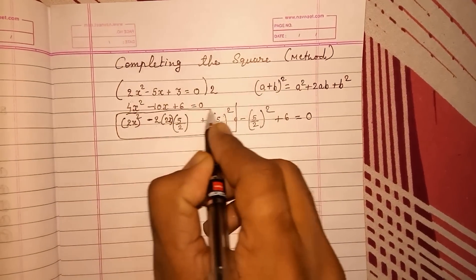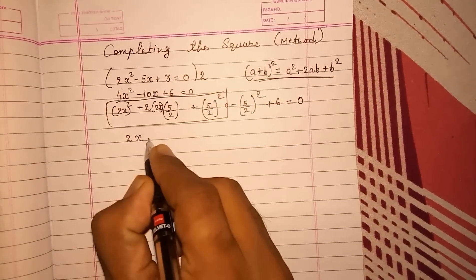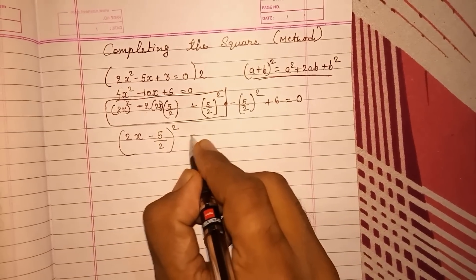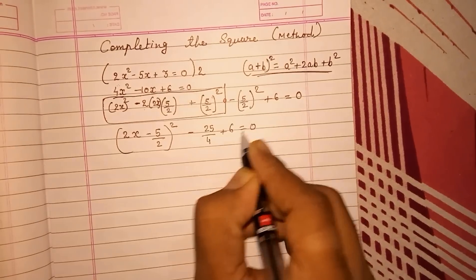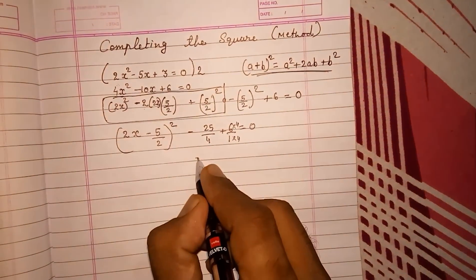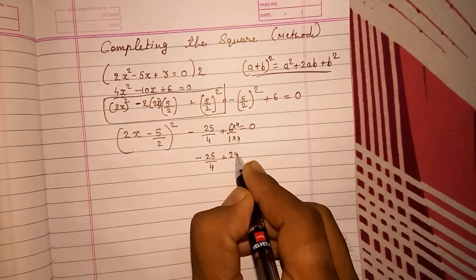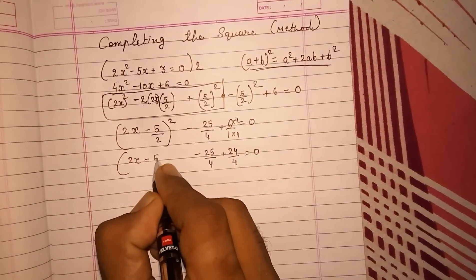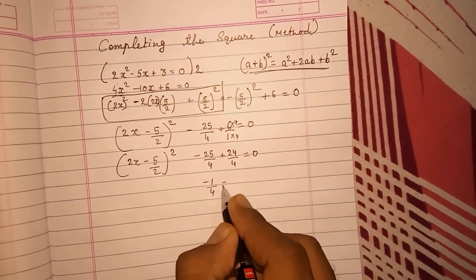Now here we are getting a formula. So I will convert it into 2x minus 5 by 2 whole square minus 25 by 4 plus 6 equals to 0. I have to take out LCM into 4 into 4. Minus 25 by 4 plus 24 by 4 is equal to 0. Then 2x minus 5 by 2 whole square, I will get minus 1 by 4 equals to 0.